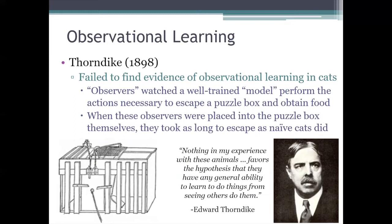Thorndike conducted some of the earliest research on observational learning and concluded that it was unique to humans. He found that even if one cat watched another cat solve a particular puzzle box, the observer cat didn't appear to learn the solution. When Thorndike put the observer into the puzzle box, that cat behaved just like a naive cat who had never observed the model. So Thorndike doubted that observational learning was possible in non-human animals.